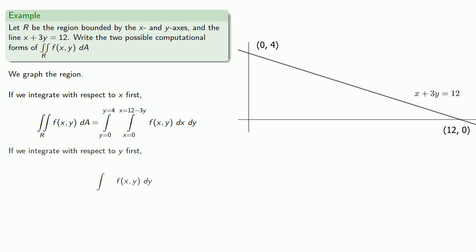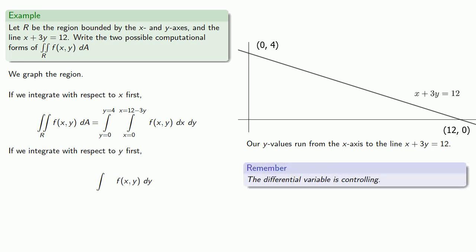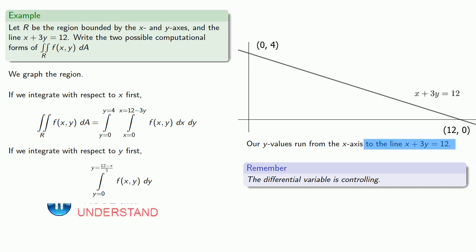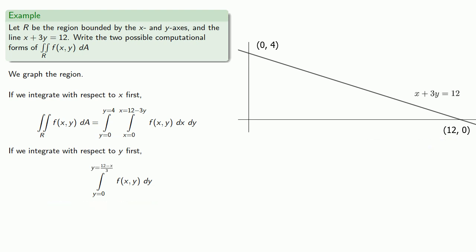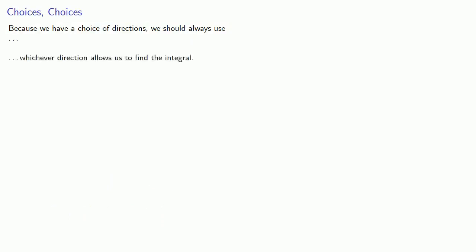We can also integrate the other way. If we integrate with respect to y first, our y values — the vertical distance — run from the x-axis to the line x plus 3y equals 12. The differential variable is controlling, so our limits go from y equals something to y equals something. The x-axis has equation y equals 0, and we solve x plus 3y equals 12 for y to get our upper bound. Then we integrate with respect to x, and our x values run from x equals 0 to x equals 12.